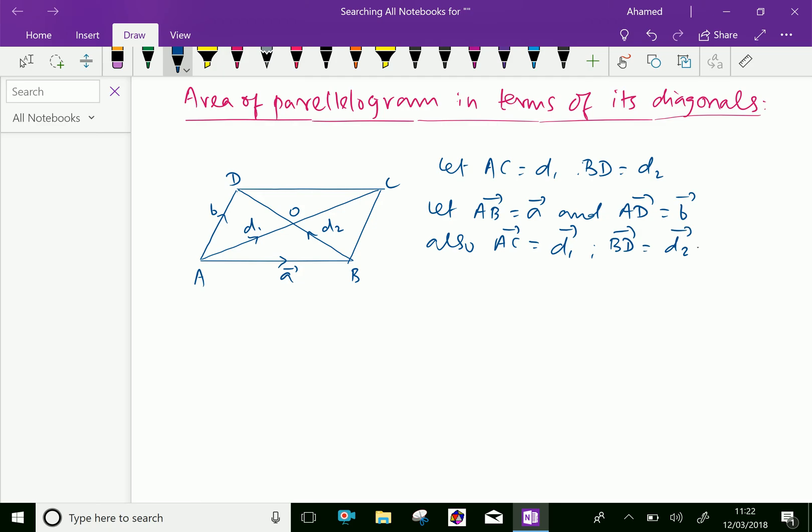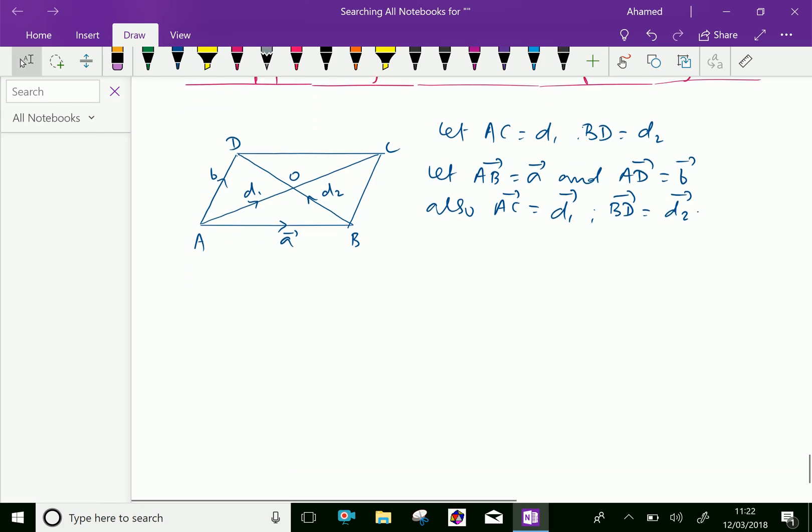Since the parallelogram, the diagonals bisect each other, so we can say vector AO is half of vector D1 and vector BO is half of vector D2. In any parallelogram, diagonals bisect each other.